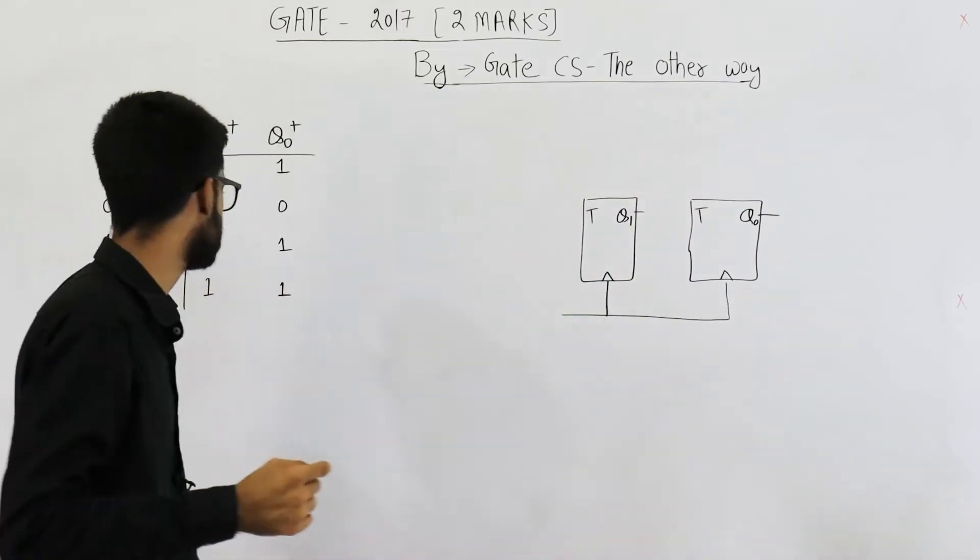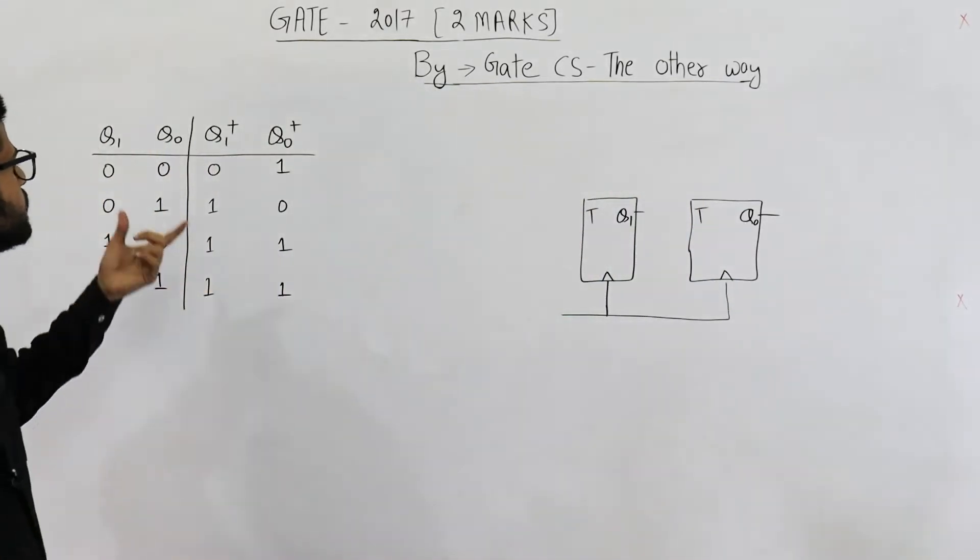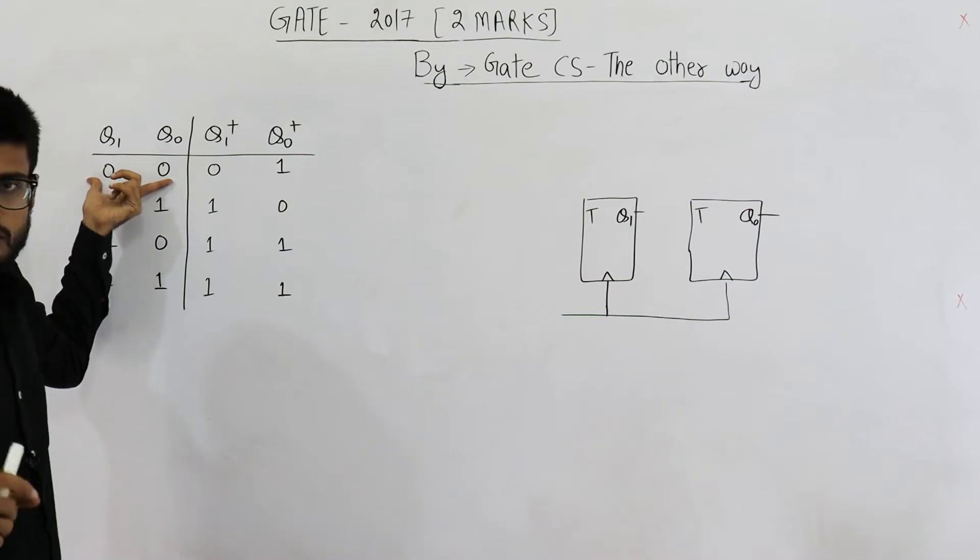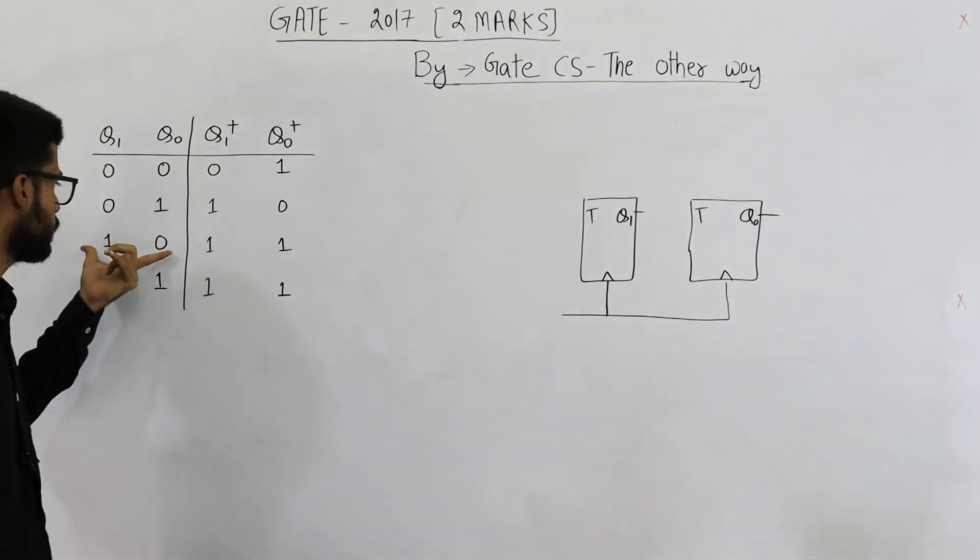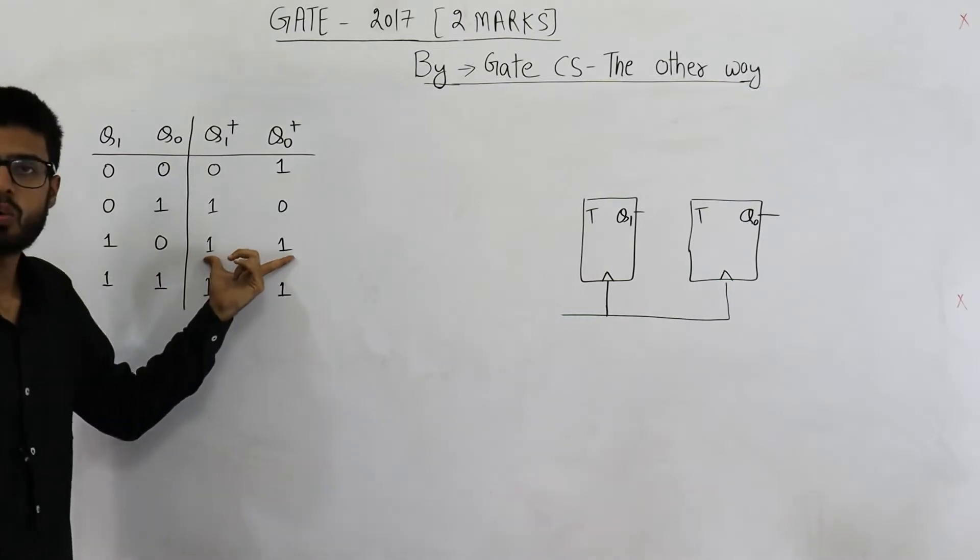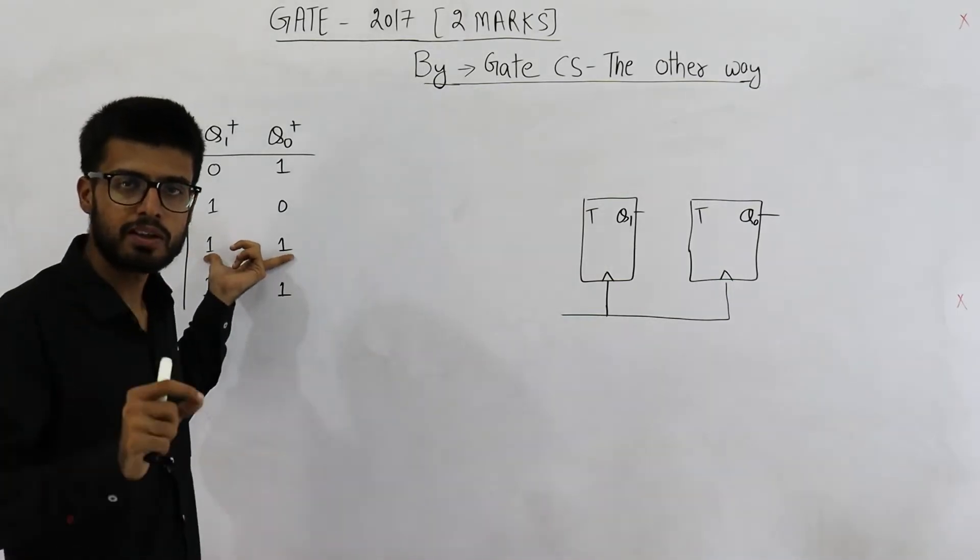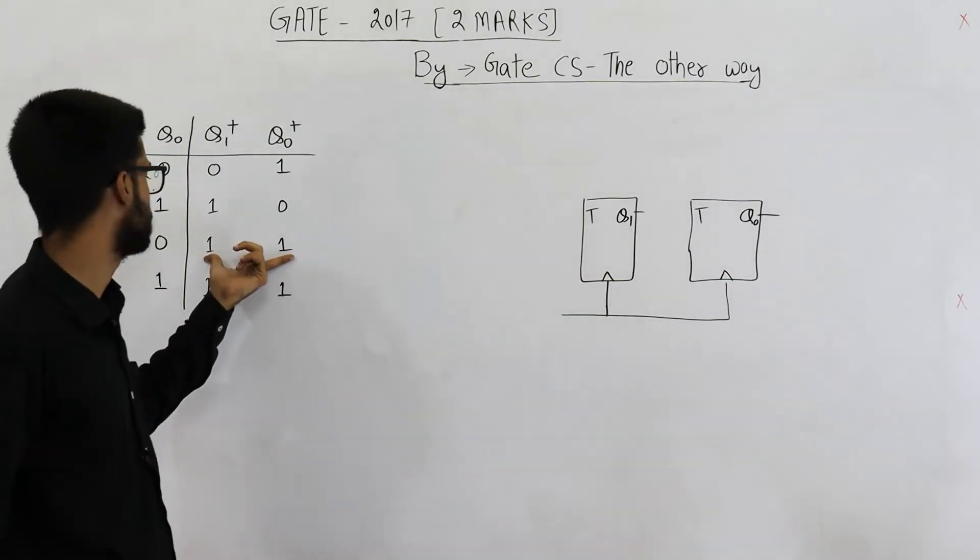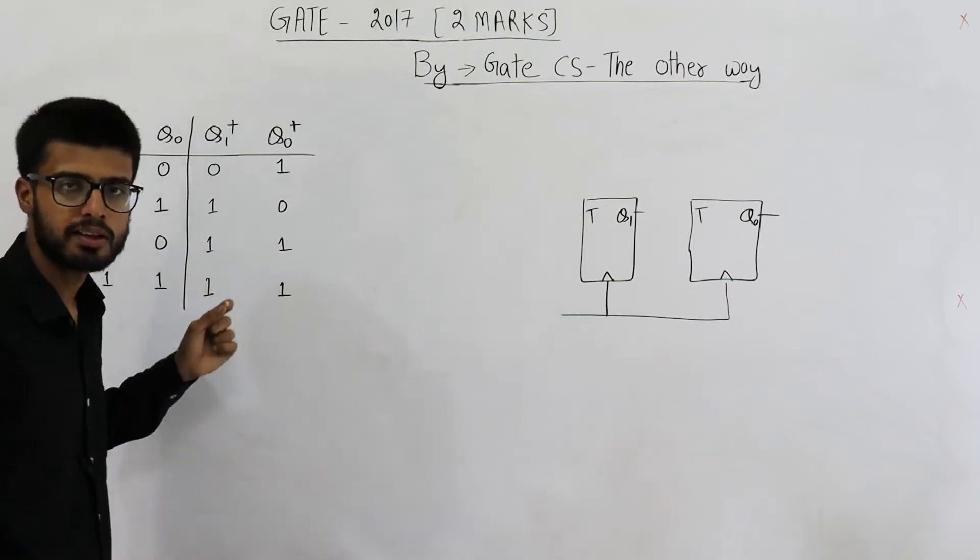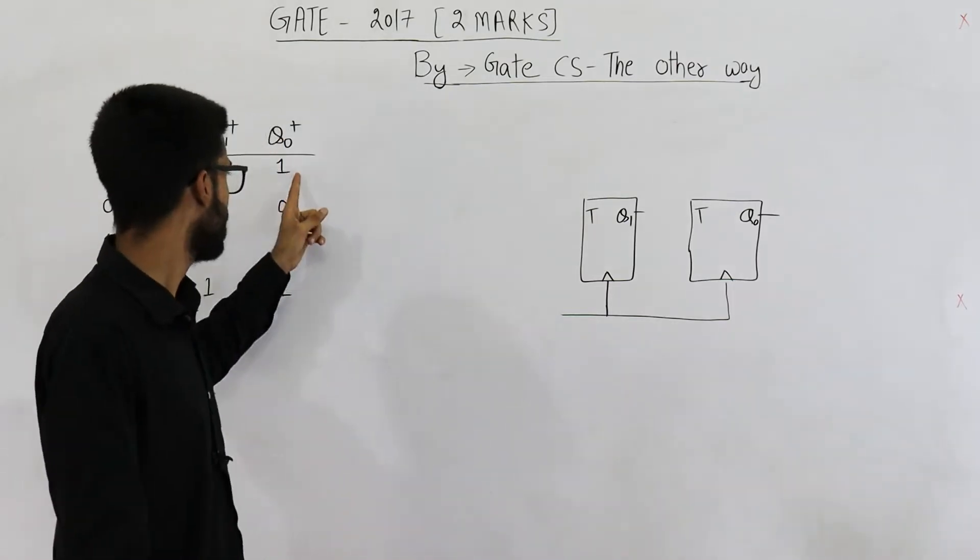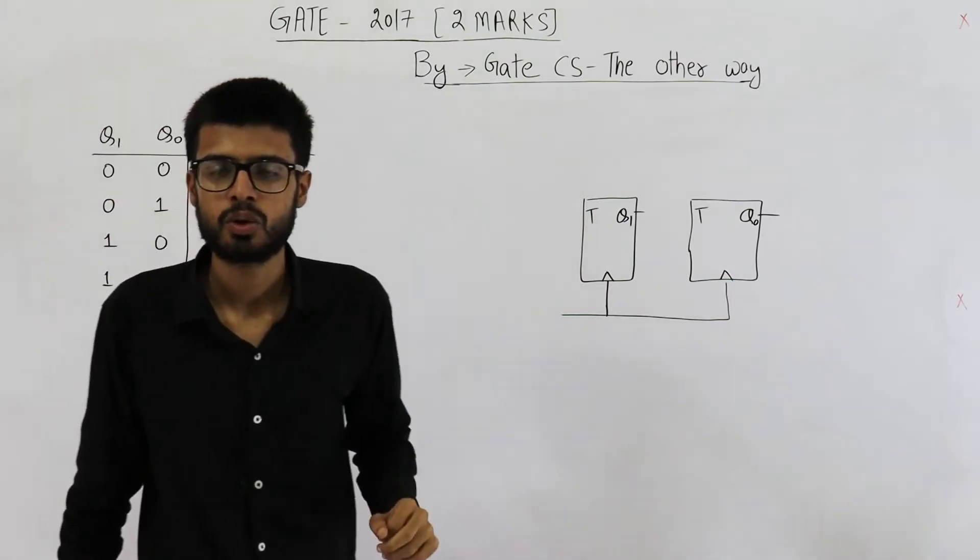What do I mean by saturating up counter? See, if you are currently on 0, next state is 1. From 1, next state is 2. From 2, next state is 3. Once you reach here, you will remain in state 3 only. See, if you give a clock cycle and current state is 3, next state will be 3 only. This means saturating and it's clearly visible that this one is up counter.